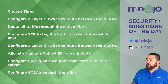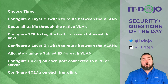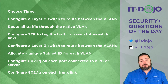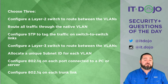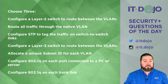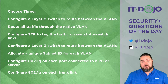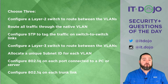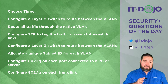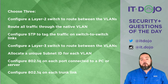How about the third choice: configure STP — the Spanning Tree Protocol — to tag traffic on your switch-to-switch links? That sounds compelling, except Spanning Tree has nothing to do with tagging data. STP is a protocol all about loop avoidance in a redundant switching topology. It does not do anything as far as tagging your different VLAN traffic. So no, that is not the right answer.